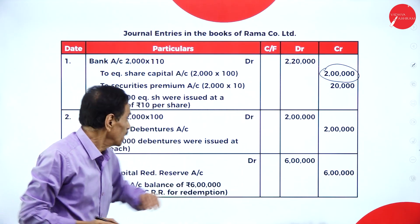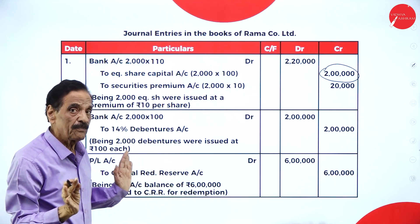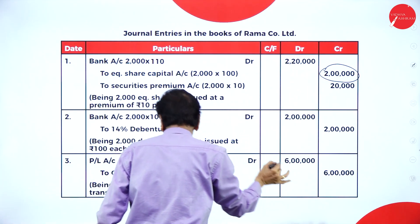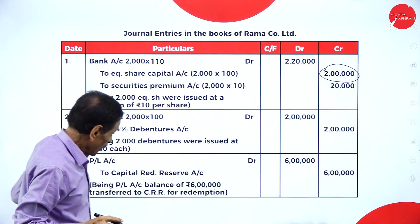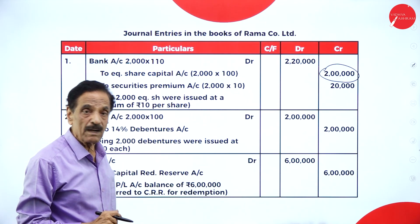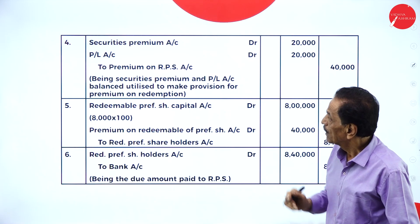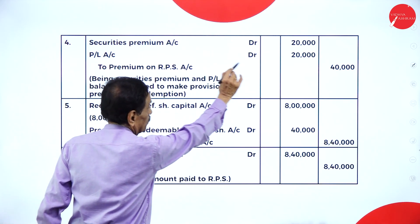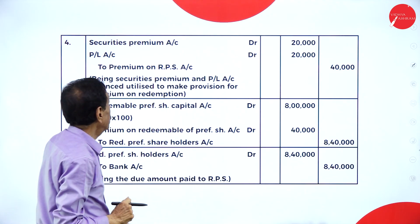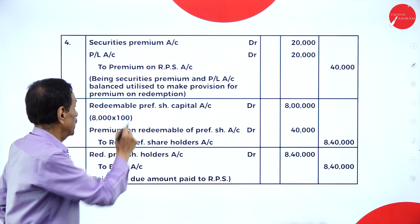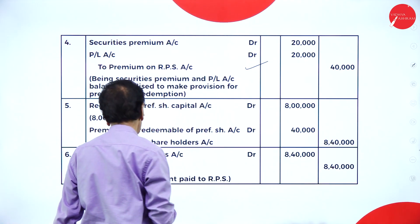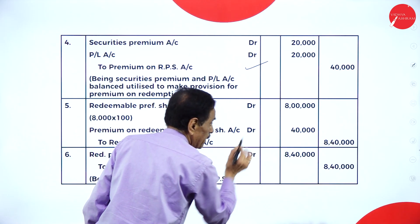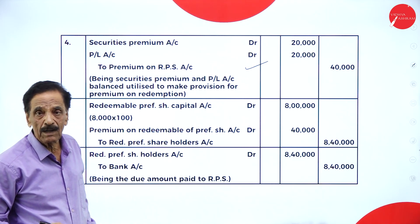Debentures have been issued: bank account debit 2 lakh. But this money cannot be utilized for redemption of preference shares. We require a total of 8 lakh. Already available: 2 lakh from equity issue. Take 6 lakh from the profit and loss account and create the CRR: profit and loss account debit to CRR account for 6 lakh. Now pay the premium of 40,000: utilize 20,000 from security premium and 20,000 from profit and loss account. Transfer entry: redeemable preference share capital account debit 8 lakh and premium on redemption of preference share 40,000 to redeemable preference shareholder account 8 lakh 40,000.